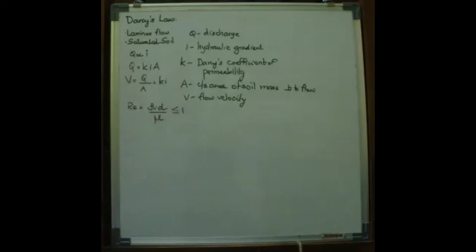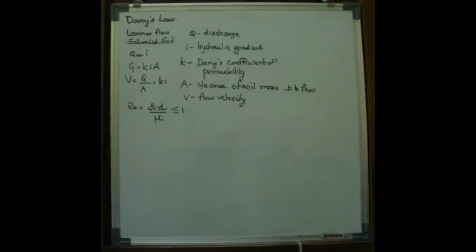For laminar flow conditions in saturated soil, the rate of flow or discharge per unit time is proportional to the hydraulic gradient. Q is proportional to I, Q equals K·I·A, and V equals Q divided by A equals K into I. Darcy's Law is valid when the Reynolds number is less than or equal to 1.